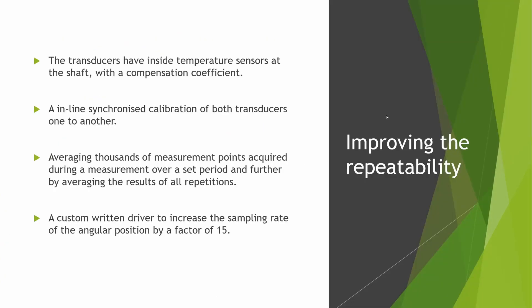There are several aspects that further improve repeatability beyond the sensor itself. For example, the transducers have an internal temperature sensor of the shaft, because each transducer can be affected by temperature due to the material measuring the bend. Our sensors have a platinum temperature sensor, allowing us to compensate for any changes occurring only due to temperature. Very importantly, we performed an inline synchronized calibration of both transducers relative to each other. So even if there were an accuracy error, it would be the same error on both sensors and would not affect our readings.